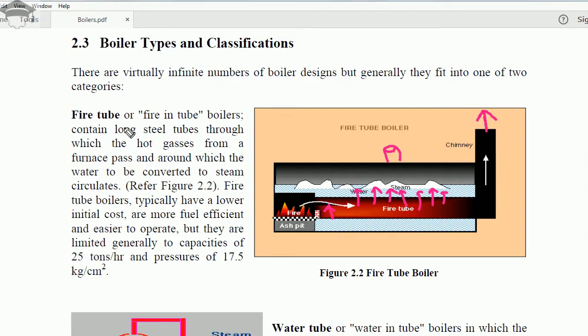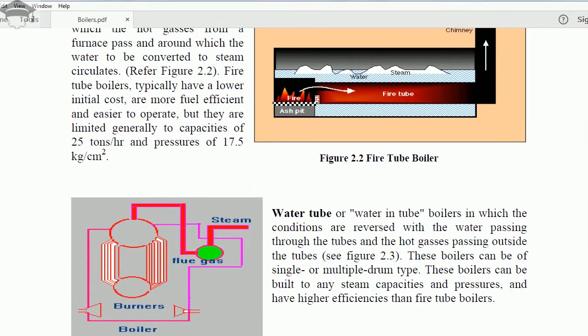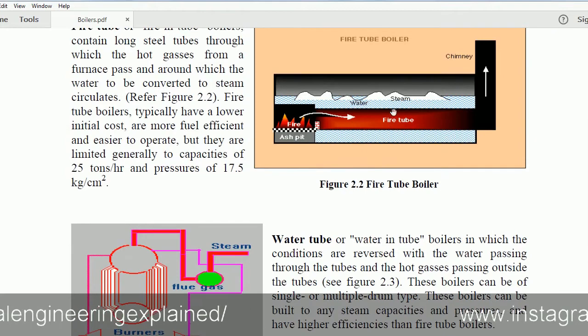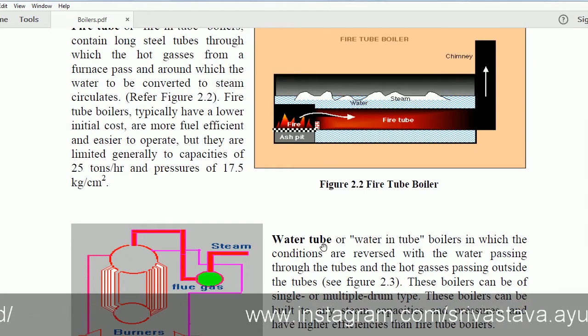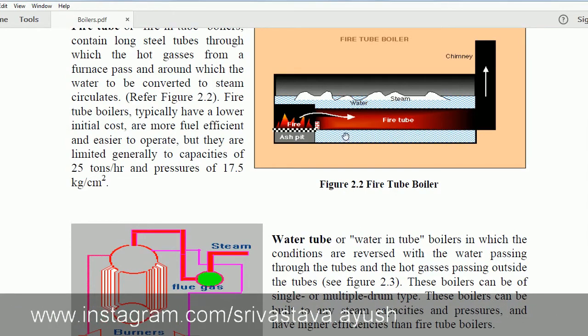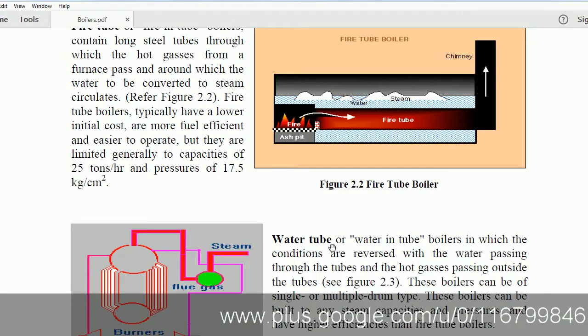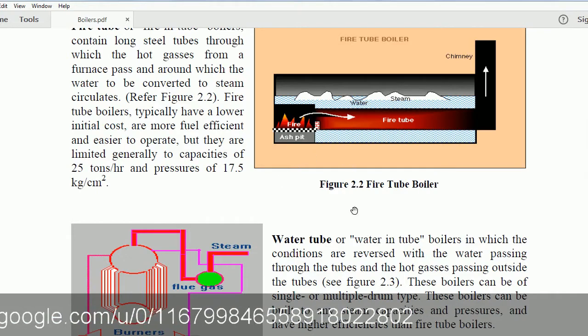But this is not much common. Much more common is water tube boiler. Now in water tube boiler, as the name suggests, in the tube we have water running, just the opposite of fire tube boiler. In fire tube boiler we have hot gases or the fire inside the tube.